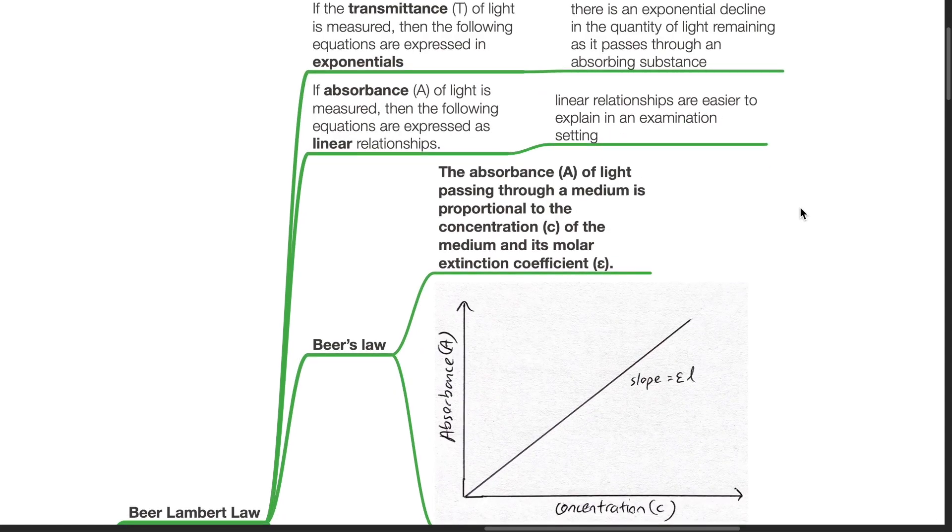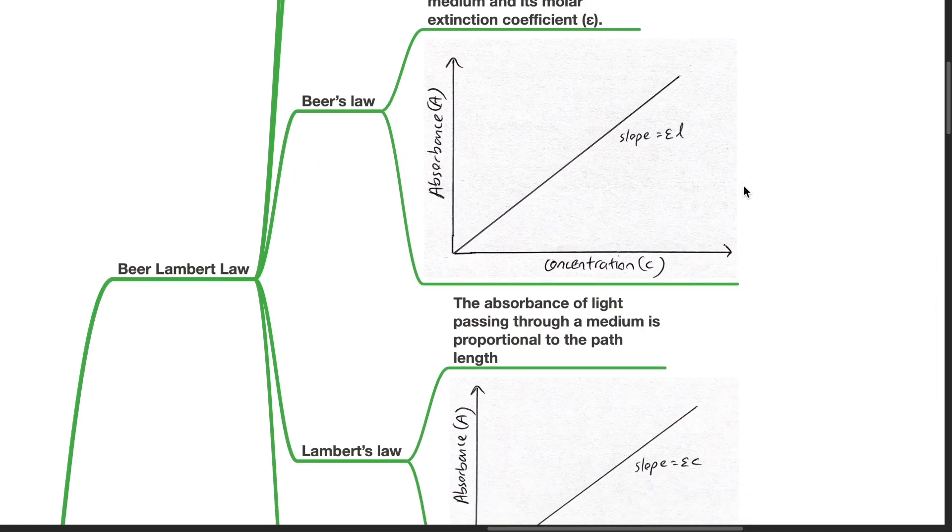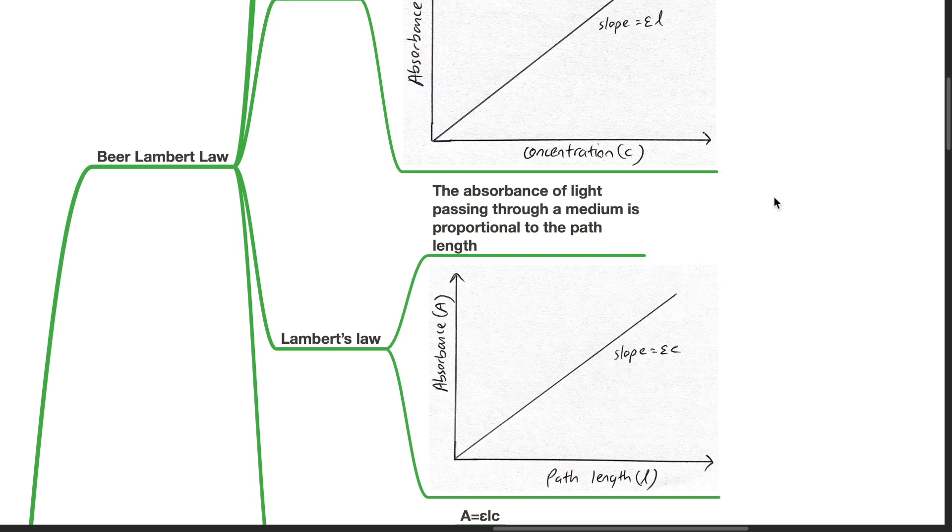Beer's law states that the absorbance of light passing through a medium is proportional to the concentration of the medium and its molar extinction coefficient.